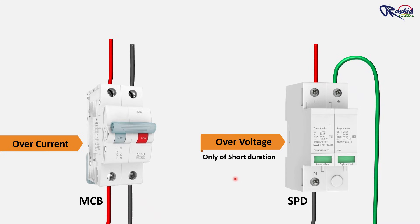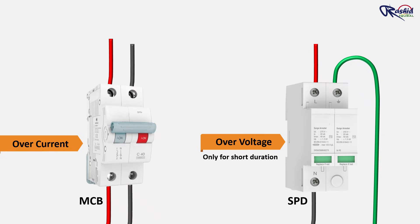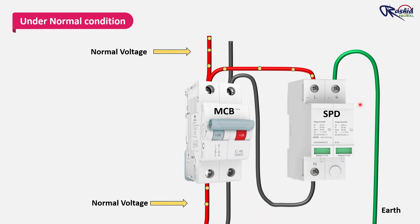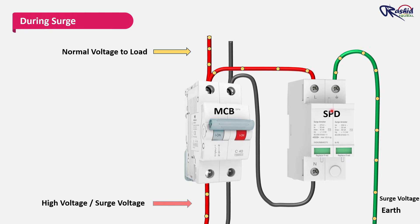So what exactly is an SPD? An SPD, or surge protective device, is a device connected in the electrical system that protects equipment from surges. During normal conditions, power flows smoothly through the electrical circuit without any disturbance. The SPD remains completely inactive, acting like an open switch. All connected equipment receive a clean and stable voltage supply. But when a surge comes, the SPD immediately detects the sudden rise in voltage and creates a safe path to send the extra energy down to earth.